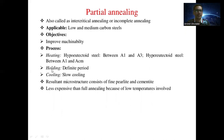The second step is holding at that temperature for a definite period of time. Then slow cooling in air is performed. The resultant microstructure consists of fine pearlite and cementite structure. Partial annealing is less expensive than full annealing because of the lower temperatures involved.